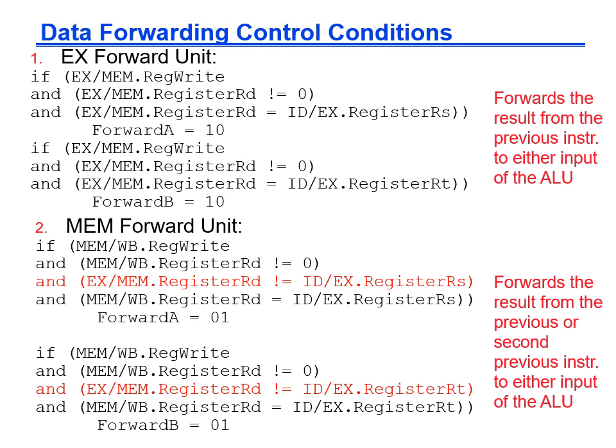Here we have pseudocode for the forwarding logic. It checks if the destination of the instruction is not $zero and if the destination will be written to, then compares the destination register number with the two source register numbers of the next instruction in the pipeline, available from the ID/EX buffer. 10 in binary means to use the value from the EX/MEM buffer, and 01 means to use the value from the writeback stage. The default should be 00 if none of these match. The lines highlighted in red show how the logic incorporates the rule to select the earlier instruction in the pipeline for forwarding in case of a conflict.